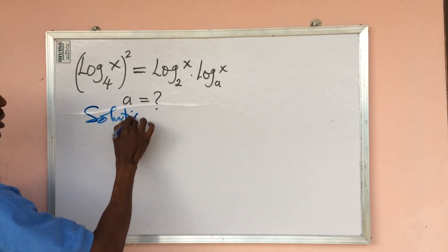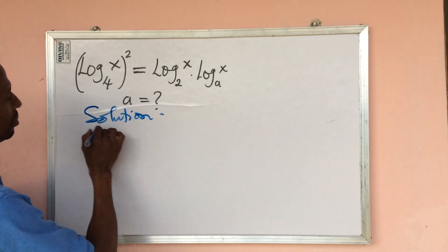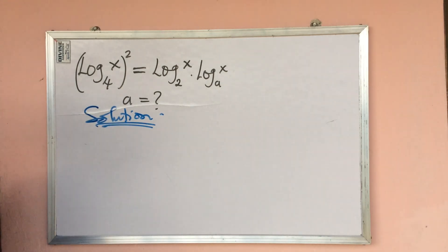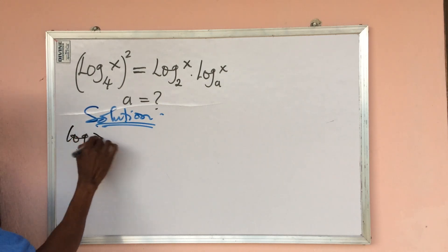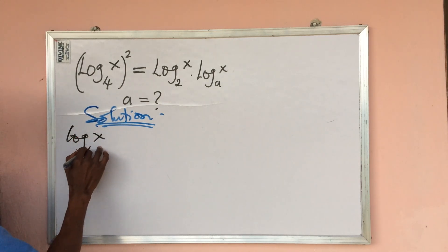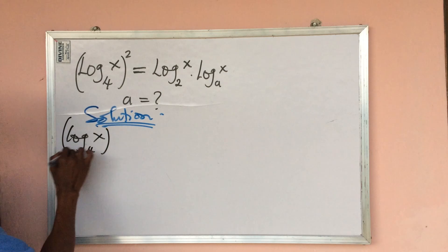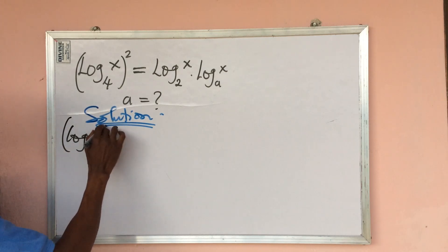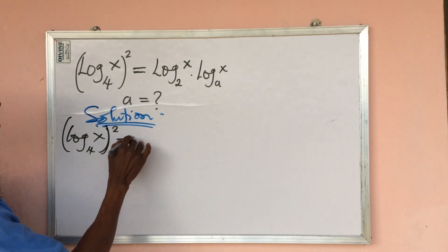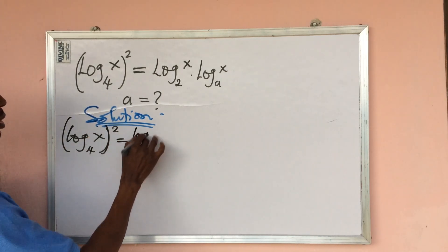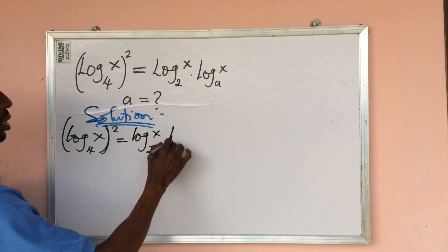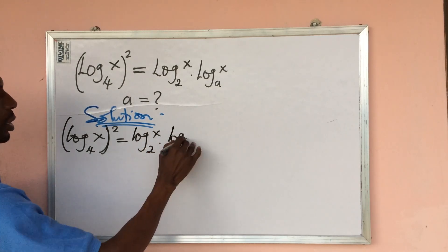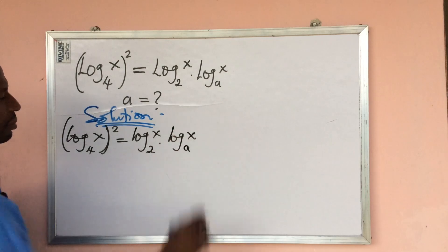The question reads: log x base 4 squared equals log x base 2 times log x base e.